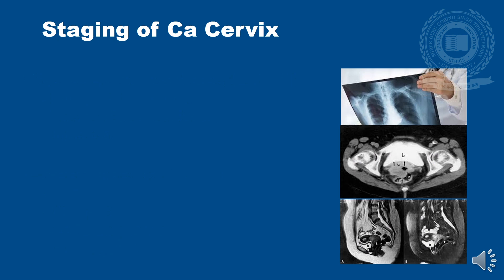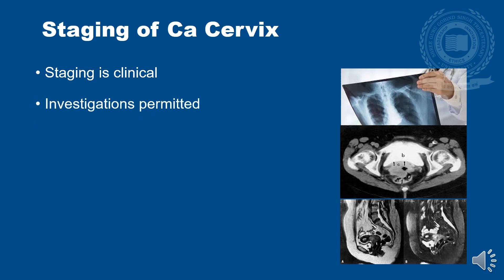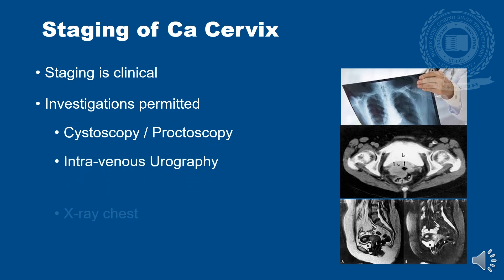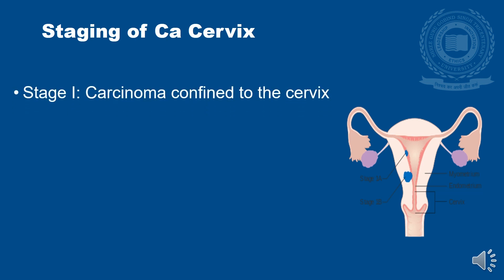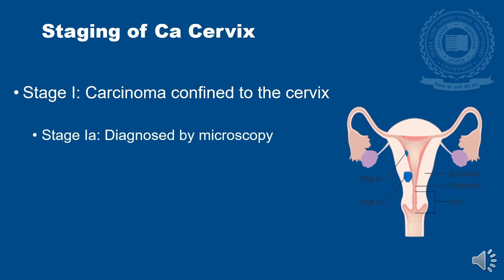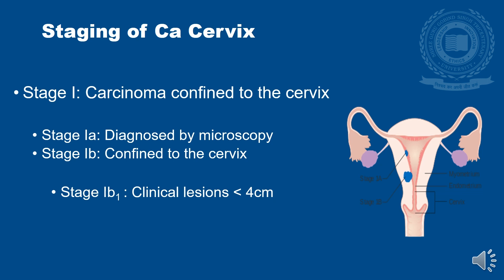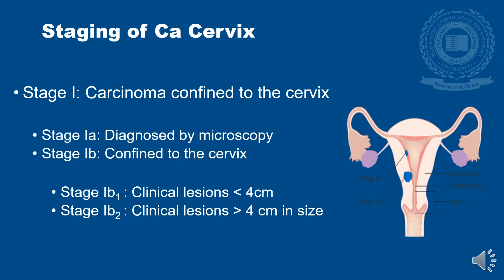Staging of carcinoma cervix is clinical, though investigations such as cystoscopy, proctoscopy, intravenous urography, X-ray chest, and imaging like ultrasonography, CT, or MRI are permitted as needed. Stage 1: carcinoma confined to the cervix. Stage 1a is diagnosed only by microscopy. Stage 1b is confined to the cervix — Stage 1b1 is a clinical lesion less than 4 cm, and Stage 1b2 is a clinical lesion more than 4 cm.